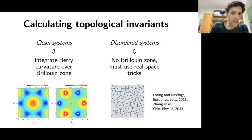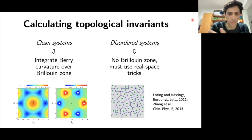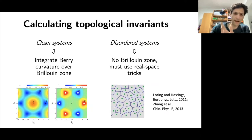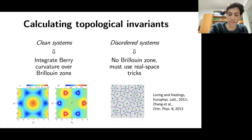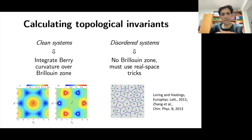The problem begins when we have disordered systems, because in disordered systems there is no notion of a Brillouin zone, no k-space. We have to use real-space algorithms. In principle, for weak disorder — just slightly perturbing the clean system — we should still have a well-defined topological invariant, and it won't change unless the disorder is strong enough to close the gap. The question is just how to calculate it.